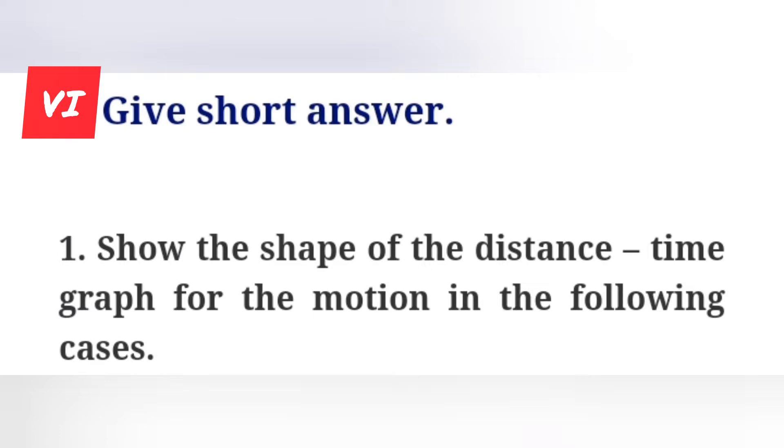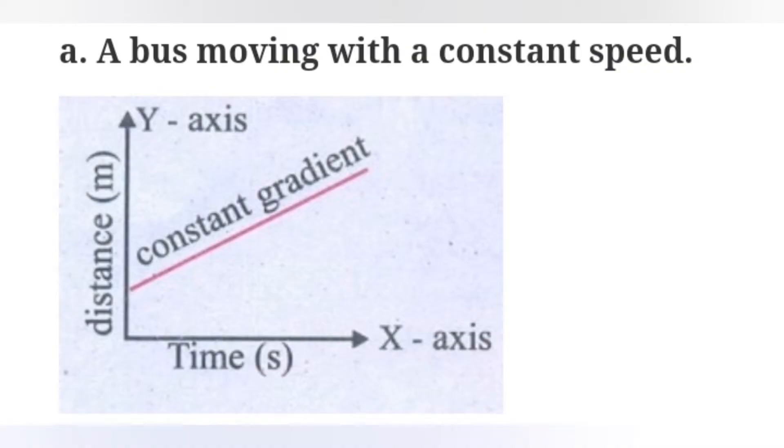Sixth Roman letter: Give short answer. First one: Show the shape of the distance time graph for the motion in the following cases. Option A: A bus moving with a constant speed. It is marked by distance, time, constant gradient. Y axis, X axis. Draw it on your own.